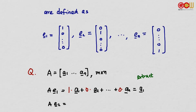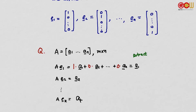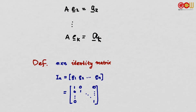Similarly, A·e2 is the linear combination of the columns of A with coefficients (0, 1, 0, ..., 0), giving us a2. So A·e2 extracts the second column vector. In general, A·ek extracts the k-th column vector of A.